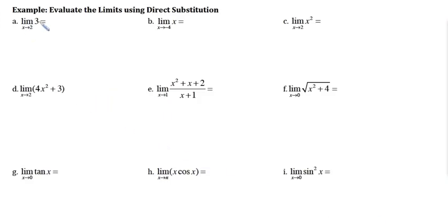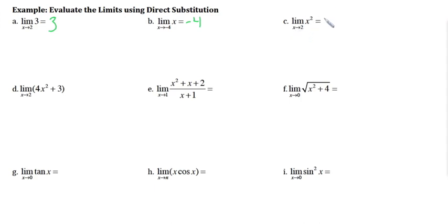The limit of 3 as x approaches 2 is just 3 — it's a constant, one of our basic limits. The limit of x as x approaches negative 4 is just negative 4. Here we have a simple exponent: the limit of x squared as x approaches 2 — we use direct substitution and get 4.